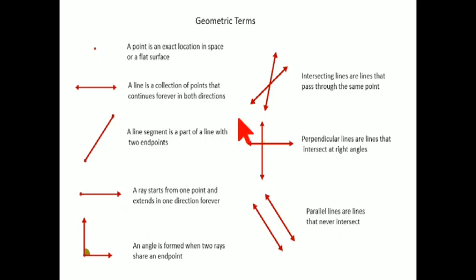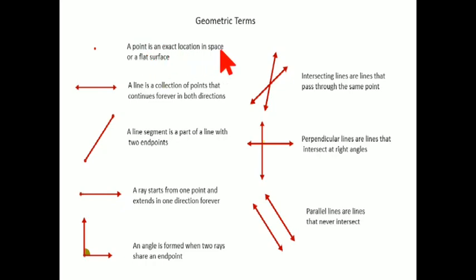Starting with the dot or a point. A point is an exact location in space or a flat surface — basically you will find this in geometry. From now onwards we are going to deal with the part of geometry. So the first and foremost concept is a dot, or a point.